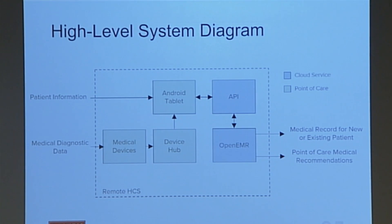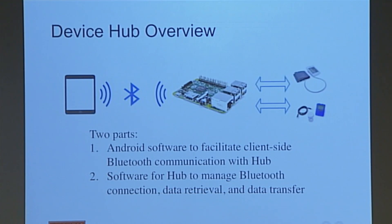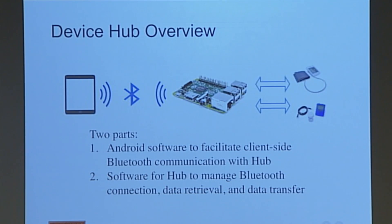Those medical recommendations are provided by doctors affiliated with NanoHealth, not by us. We have five distinct blocks in the system, and each team member took one. I was in charge of writing software for the device hub — the Raspberry Pi microprocessor — as well as for the Android tablet. That breaks into two parts: writing Android software to connect to the Raspberry Pi over Bluetooth and request information such as medical records from the testing devices, and writing Raspberry Pi software to retrieve information from the devices, format it, and send it over Bluetooth to the Android tablet.